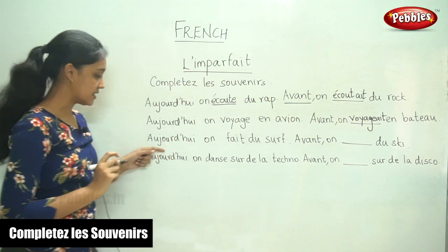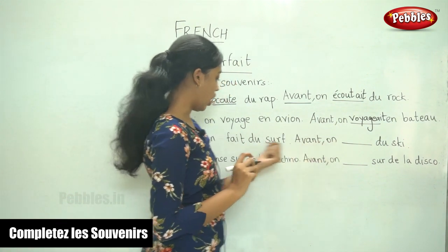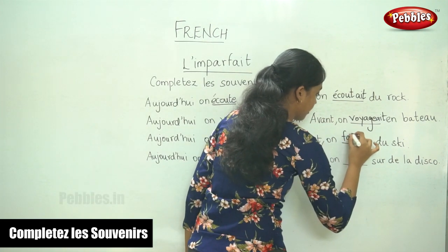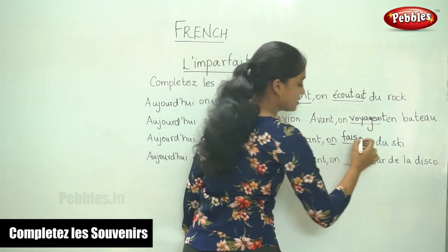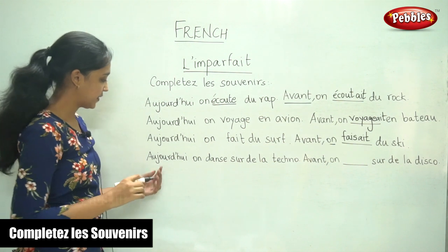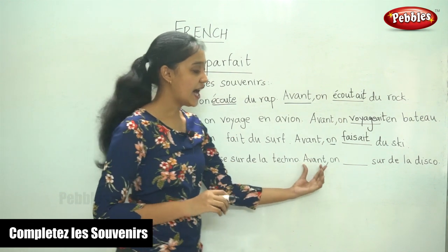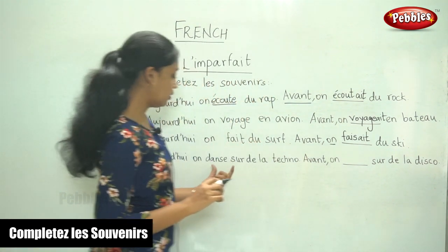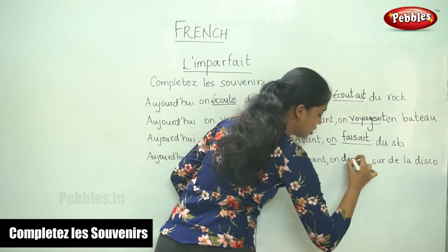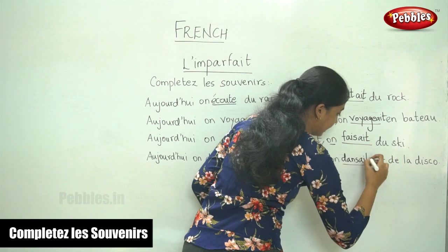The next sentence: aujourd'hui, on fait du ski. Avant, on — and for 'fait,' the imparfait form is 'faisait.' The ending is -ait, because the subject is third person singular.